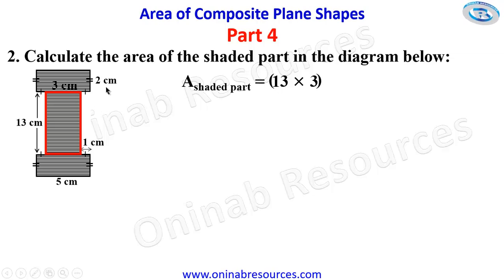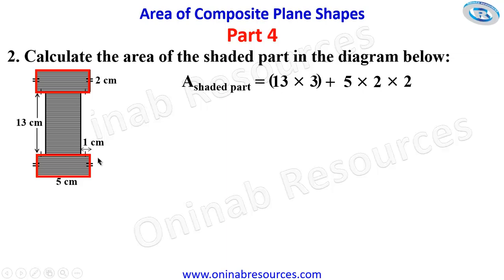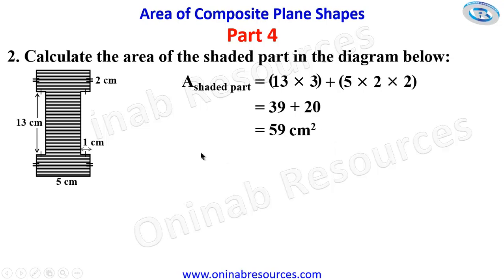We then add the area of the remaining 2 similar rectangles. Each has dimensions 5 and 2. Since they are similar rectangles, we find the area of one and multiply by 2: 5 times 2 times 2. Multiplying out and summing: 13 times 3 gives 39; 5 times 2 gives 10, times 2 gives 20. So 39 plus 20 gives 59 square centimeters, representing the area of the shape.